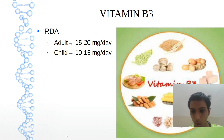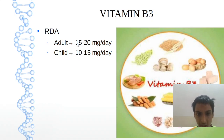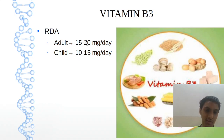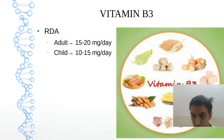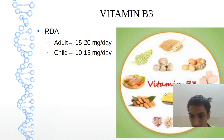The RDA for niacin in adults is 15 to 20 milligrams per day. For children, subtract 5 from those values — so 10 to 15. Sources include corn, mushroom, egg, cheese, nuts, pork, and beef.